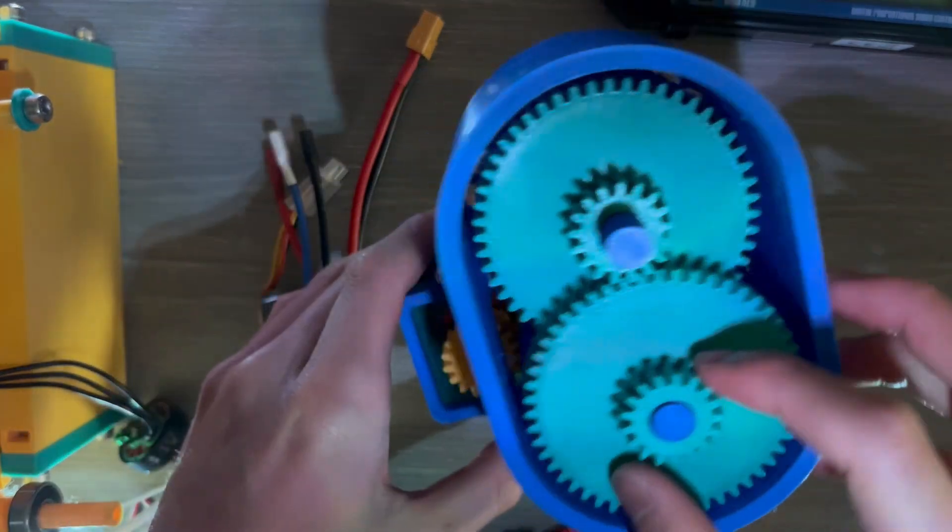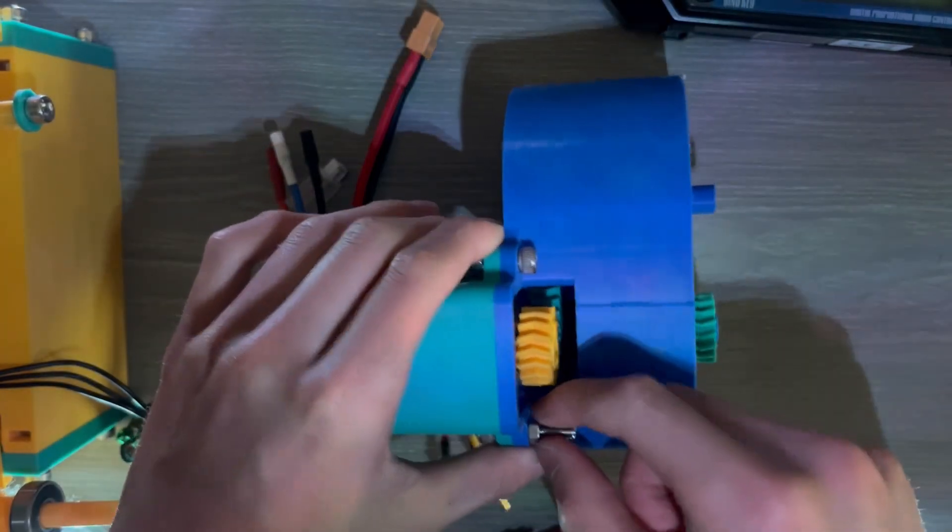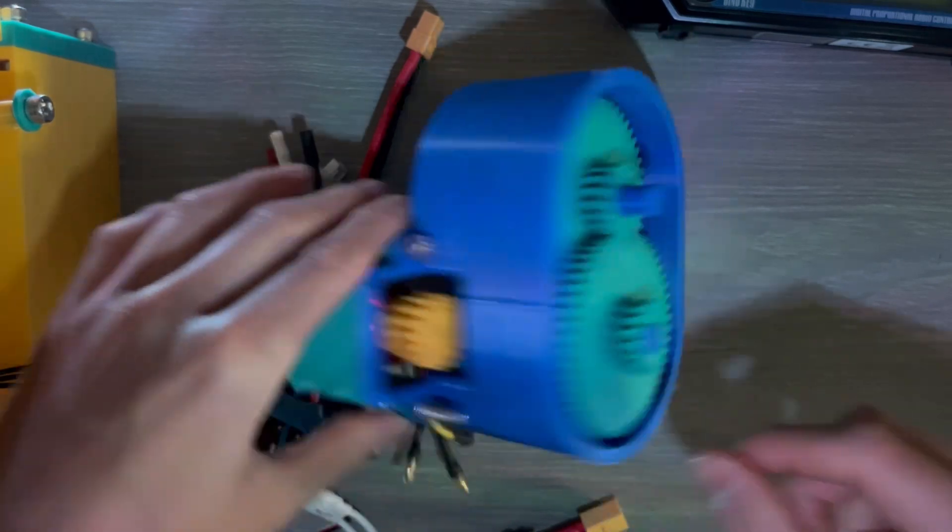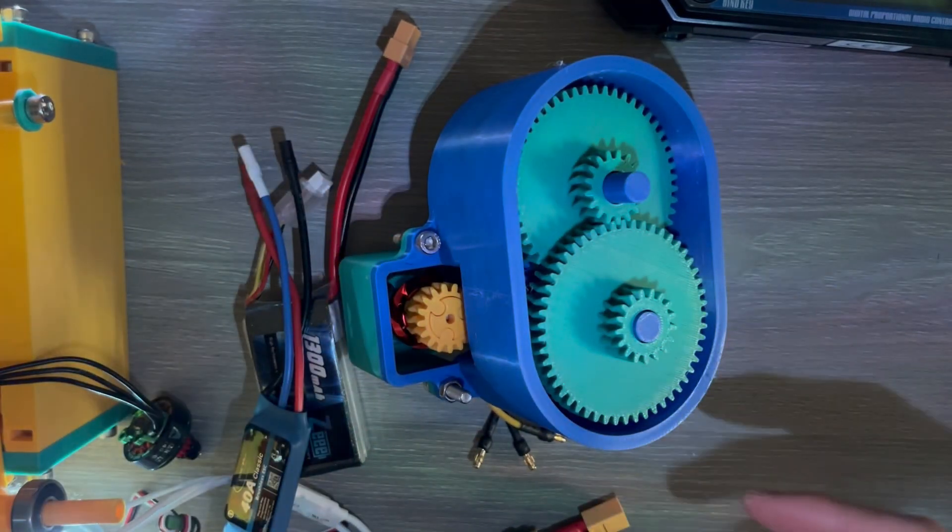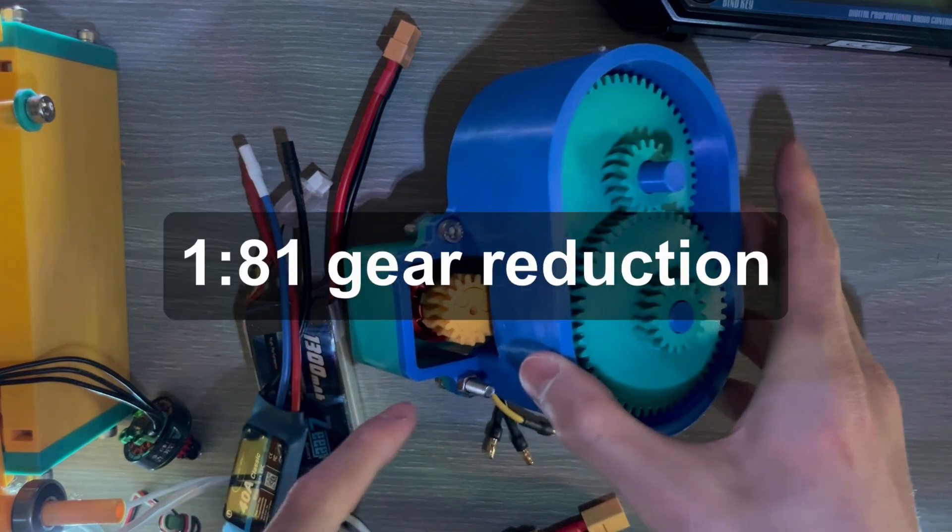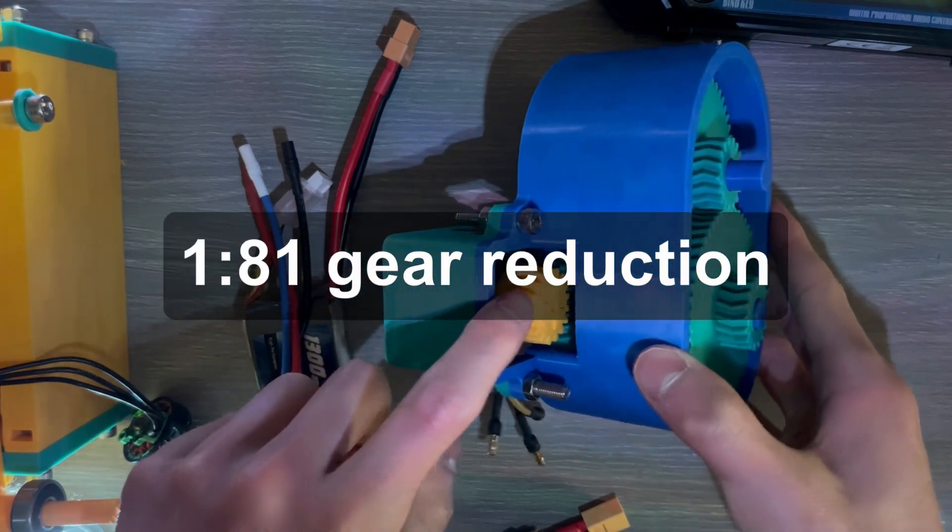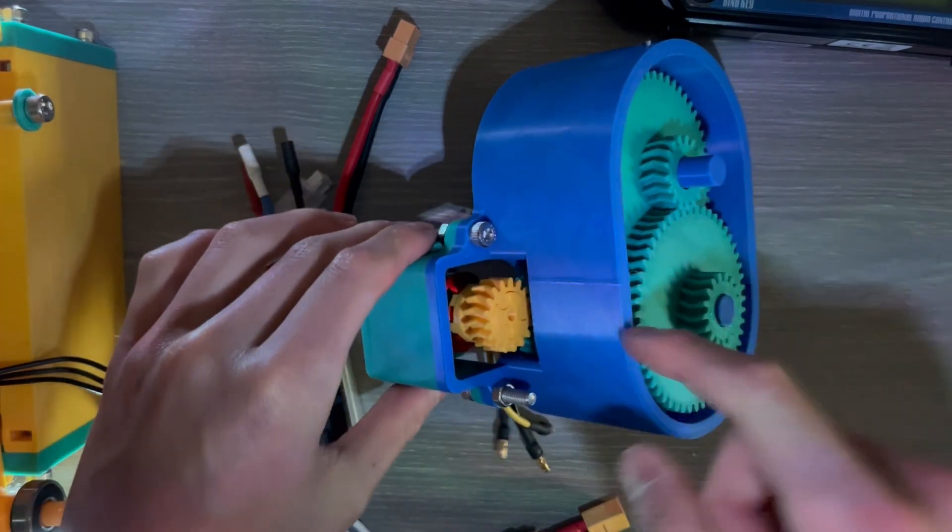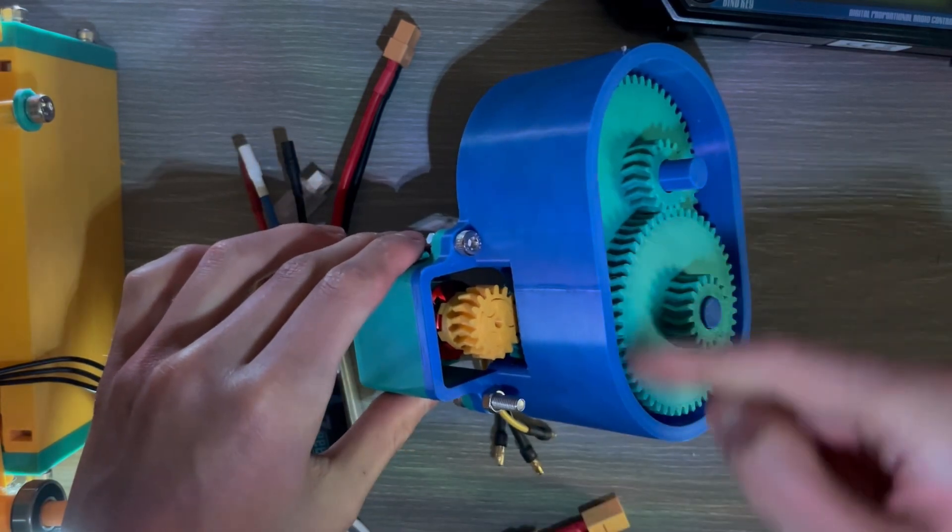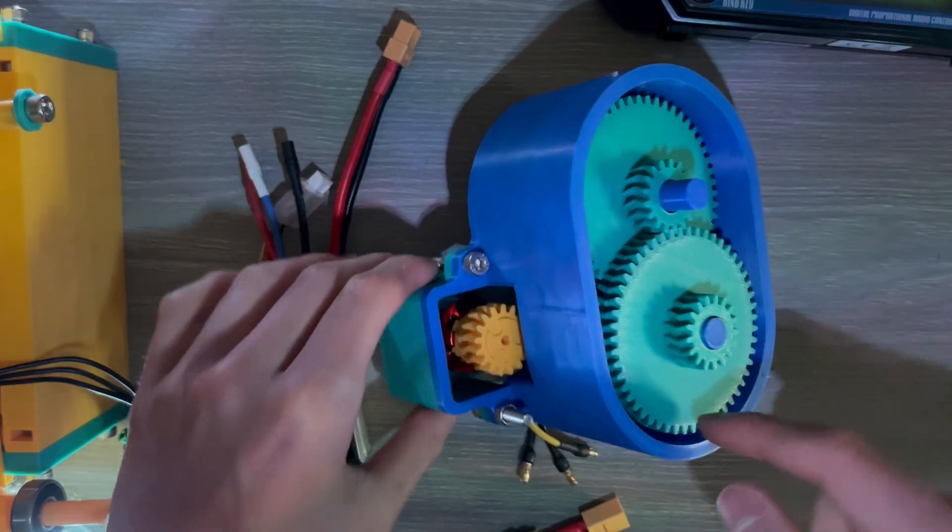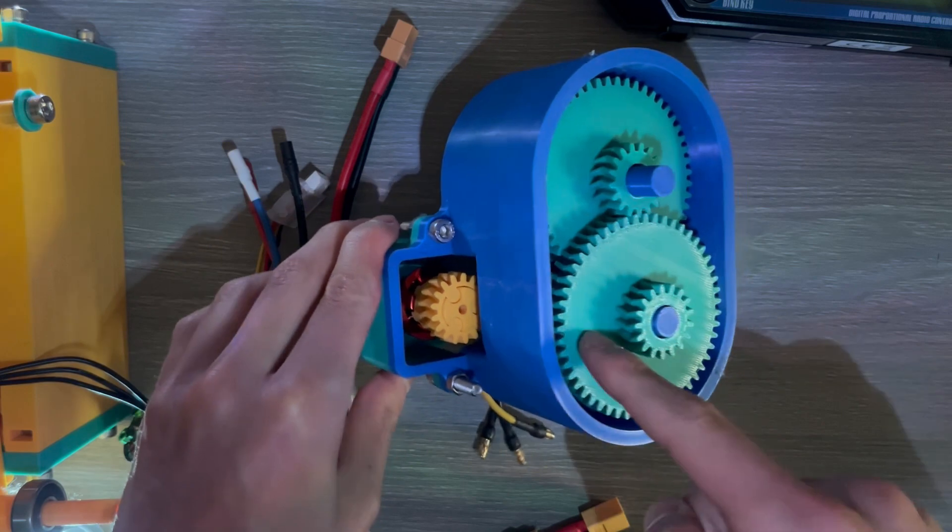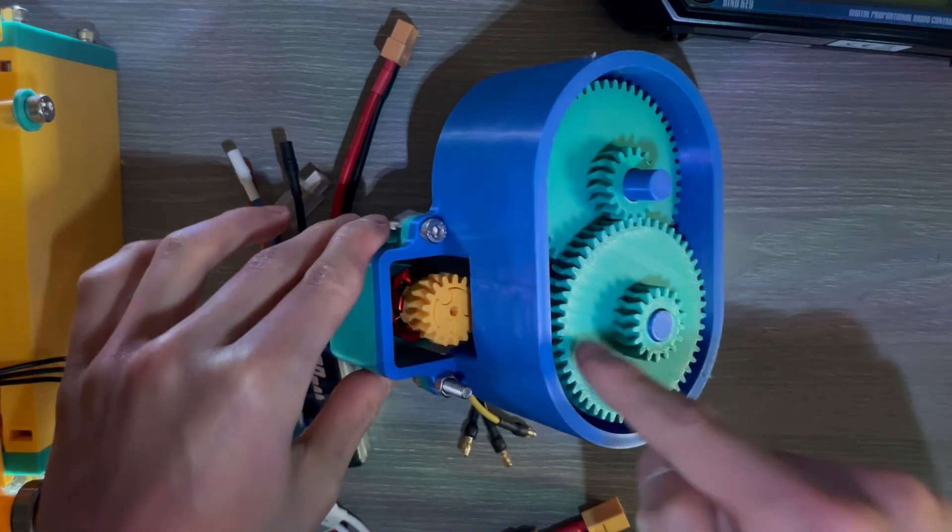I have quite a bunch of gears on here. I can give you the exact number, but it's going to be around a 1 to 81 gear ratio, meaning this guy has to spin 81 times for this guy to spin one time. So it's quite a lot of reduction, meaning I'll be getting a lot of power out of this one.